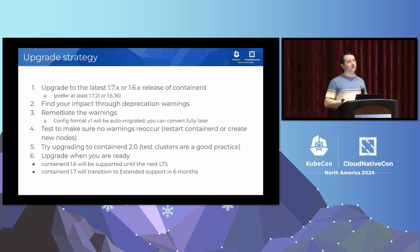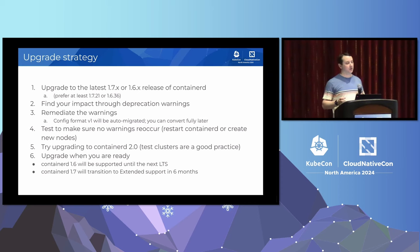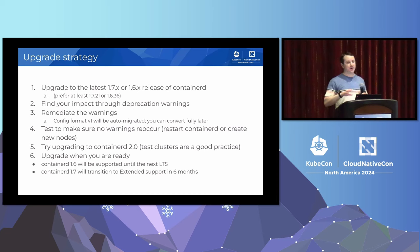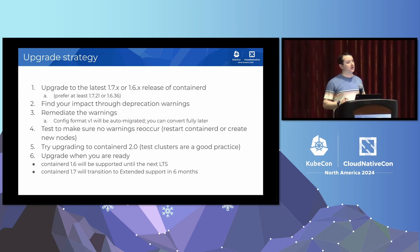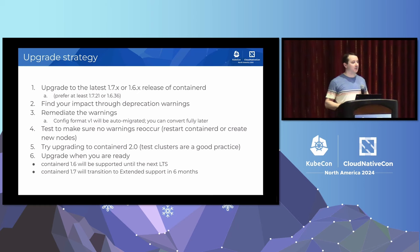1.7 is also an active supported release of ContainerD, at least for the next six months, meaning we'll continue to do bug fixes, security patches, and performance work. After six months we're expecting to transition to what we call extended support, where we'll primarily be doing security fixes and not really bug, performance, or Kubernetes compatibility work. The extended support period for 1.7 is going to continue as long as 1.6 is supported with LTS — something we're doing to ease the transition around the 2.0 boundary. That means there's no immediate rush to update to 2.0 if you're not ready.